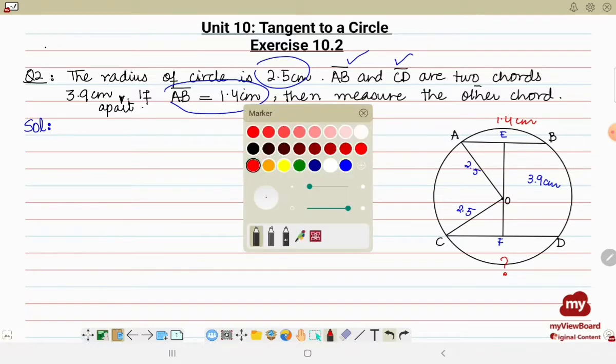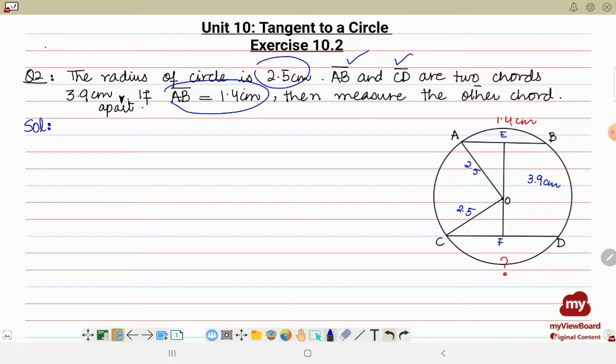Now we know by theorem that if the line from the center of the circle is perpendicular to a chord, it bisects the chord. So it is 1.4 centimeter, so this means half of this will be 0.7 and 0.7. Since we have to find out the length of the chord CD.